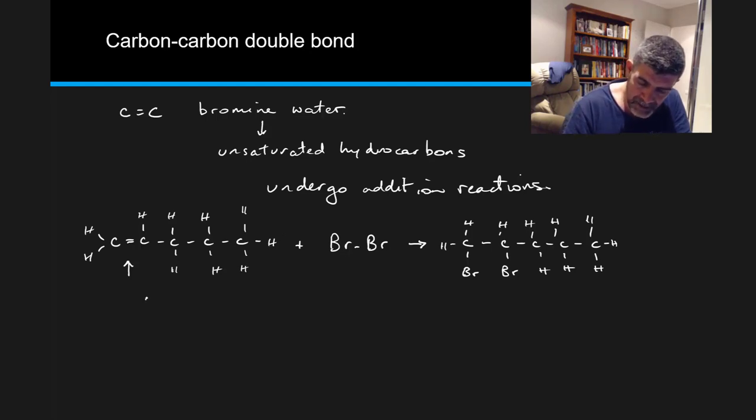So you can see this is pent-1-ene, and with the addition of bromine water in aqueous, it becomes 1,2-dibromopentane.